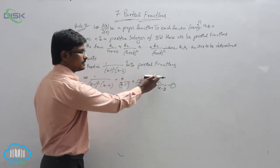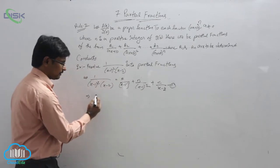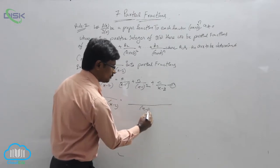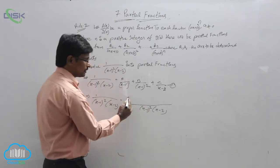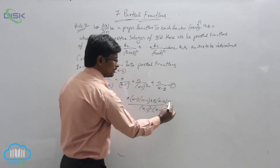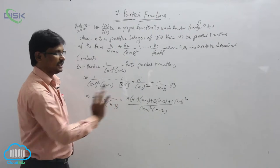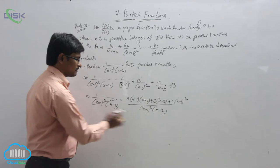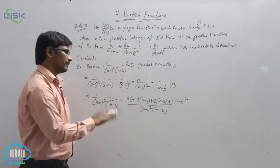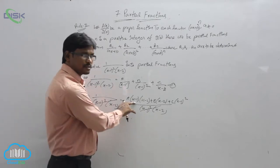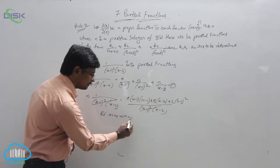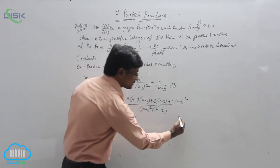Now we find the values of A, B, C by basic simplification. The LHS remains the same; for the RHS the LCM is (x-1)²(x-2). So we get: A(x-1)(x-2) + B(x-2) + C(x-1)². We can cancel the denominators on both sides. We will use the substitution method. Substitute x-1=0, so x=1; and substitute x-2=0, so x=2.